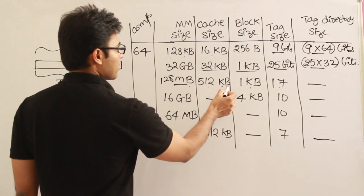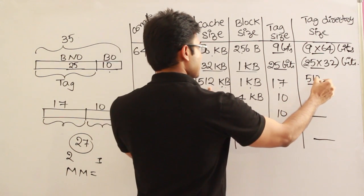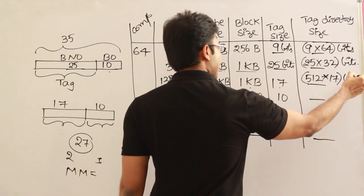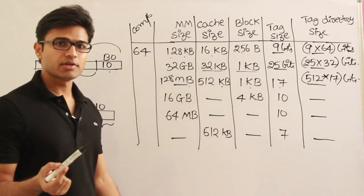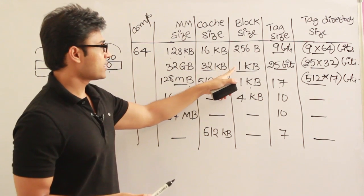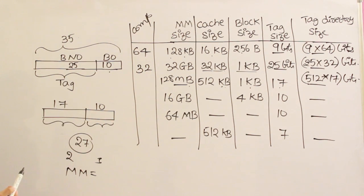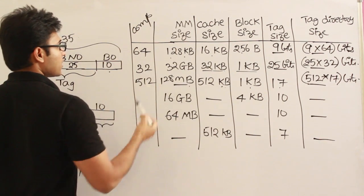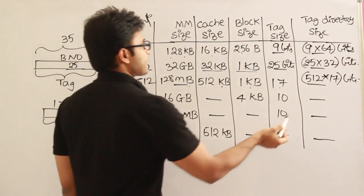The number of lines in the cache for the earlier example (32KB cache, 1KB block) is 32, so 32 comparators are required. For the revised example with 512 cache lines, 512 comparators are required — which is very large.